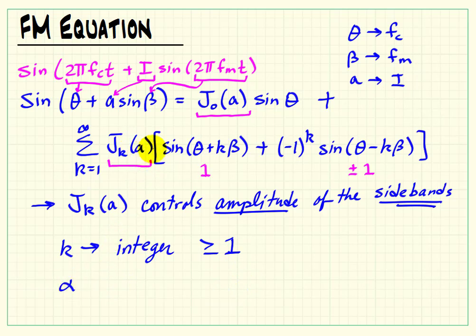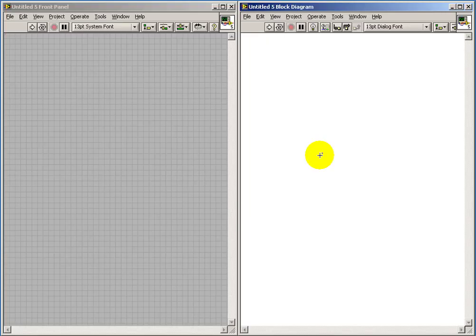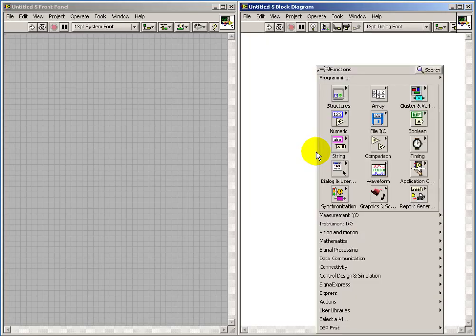A corresponds to our modulation index. And the modulation index, as we know, is called capital I. So we can just make that simple substitution there.